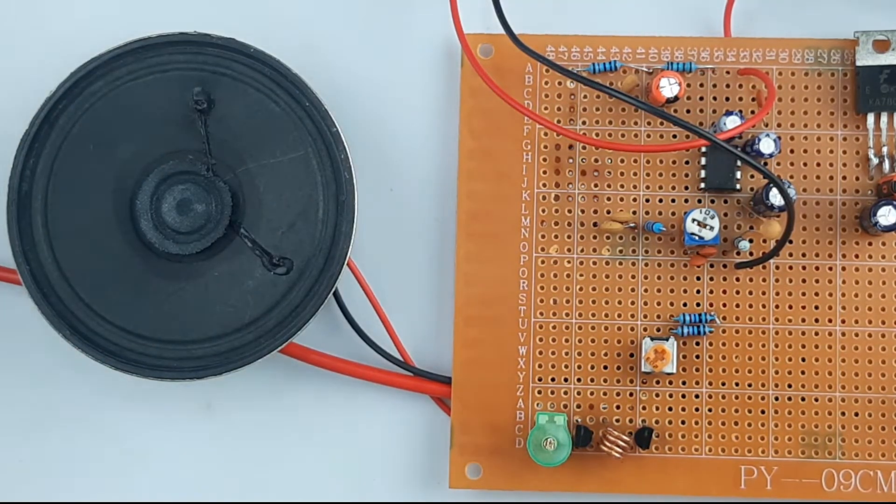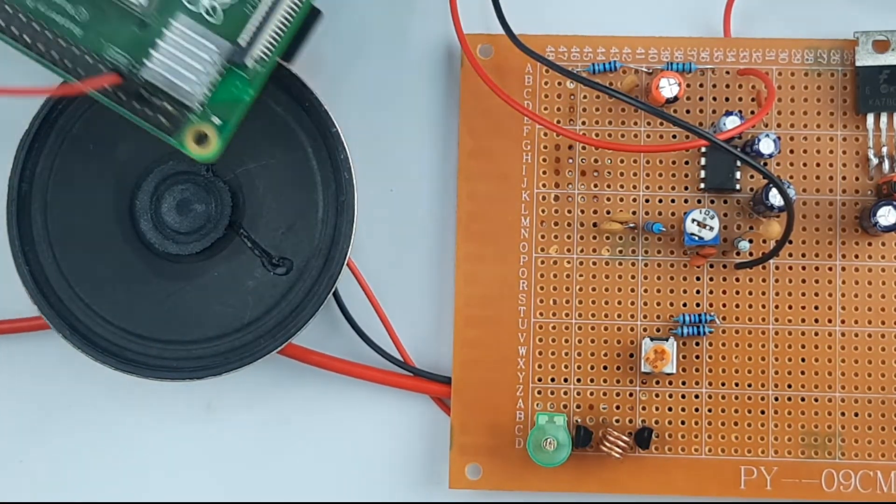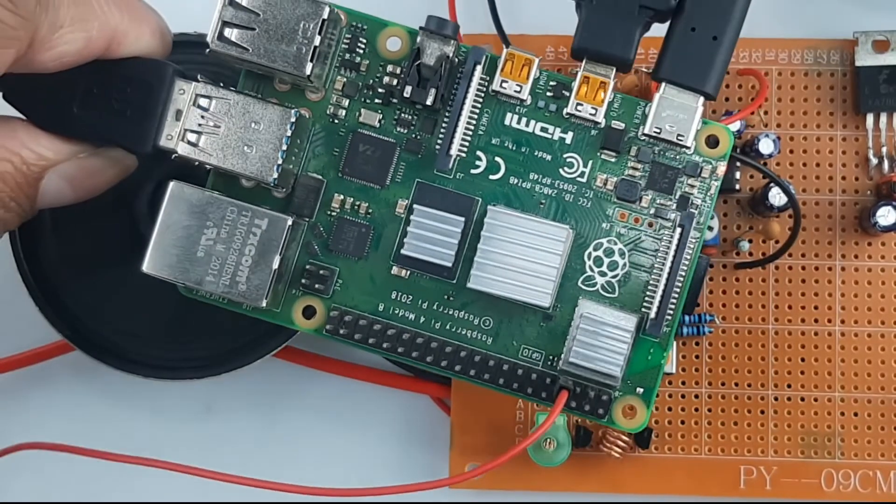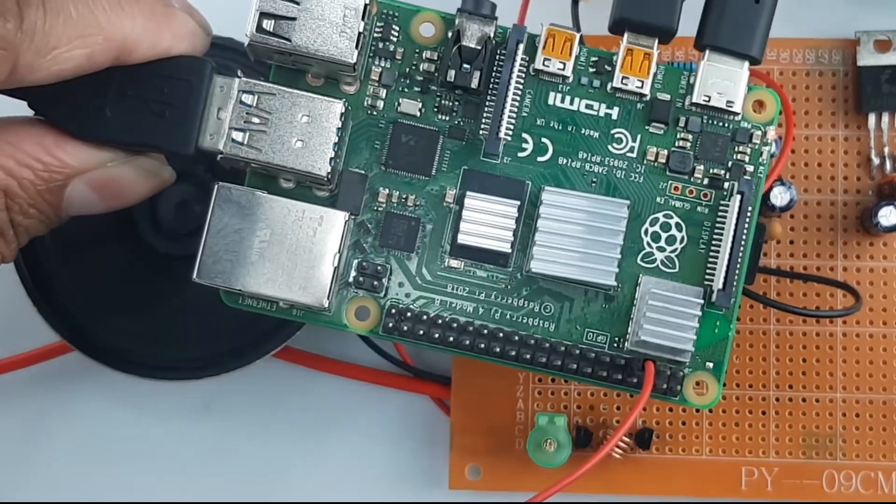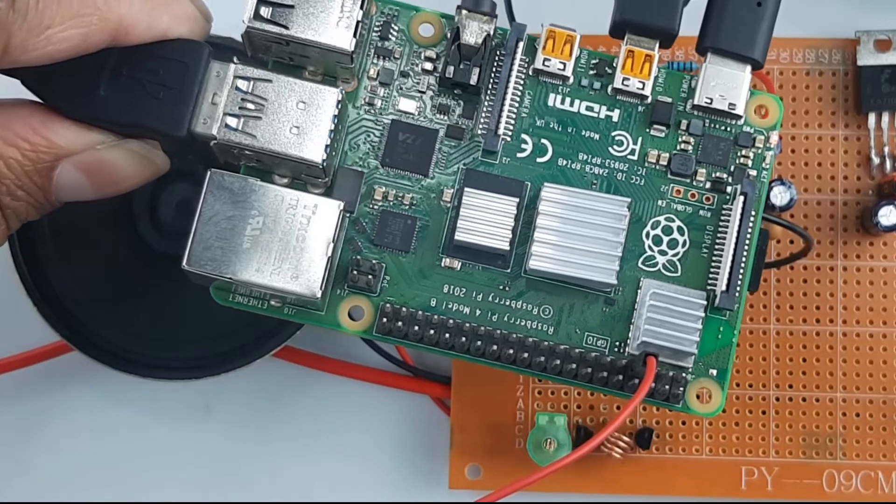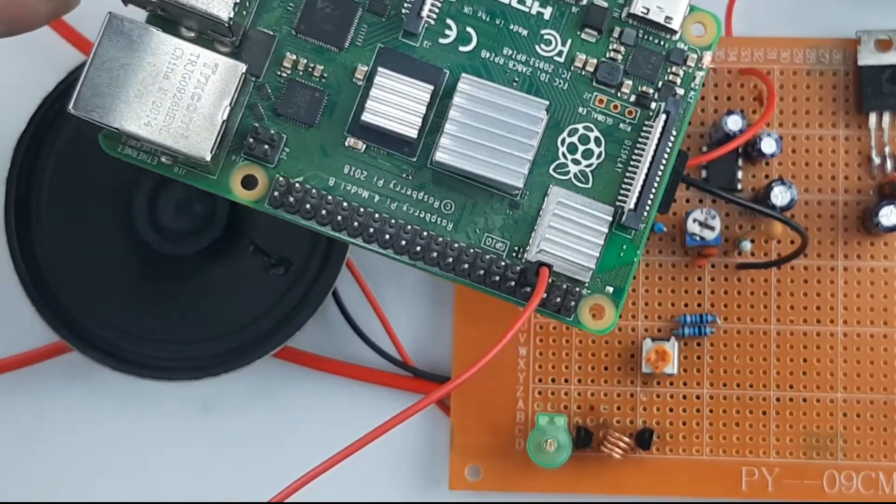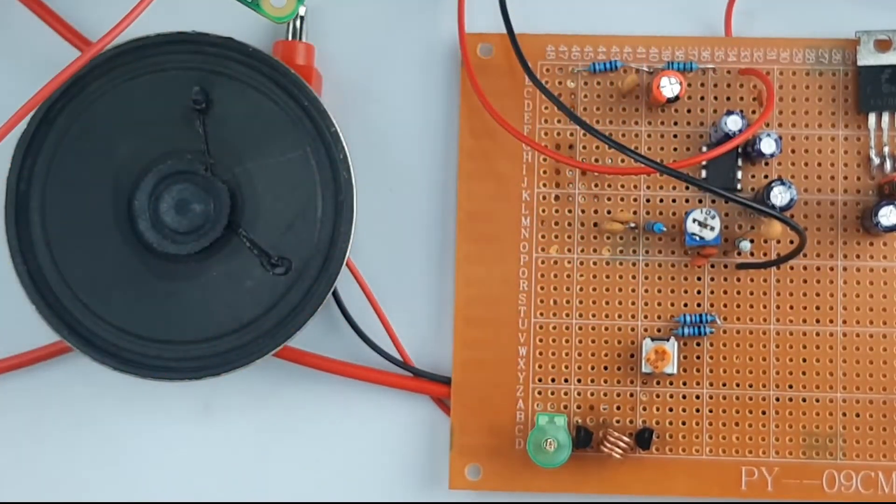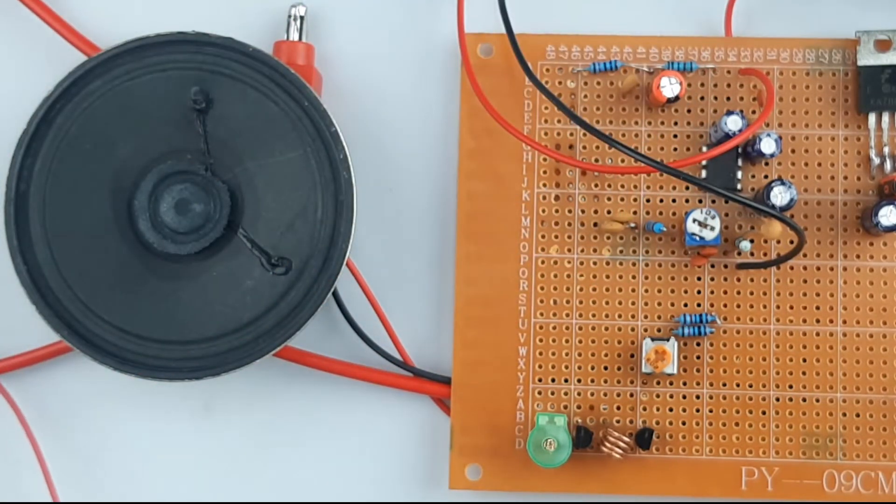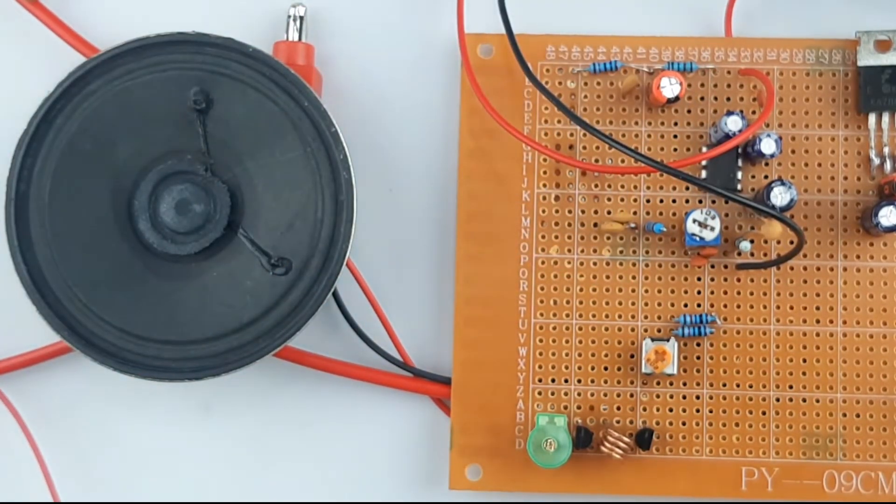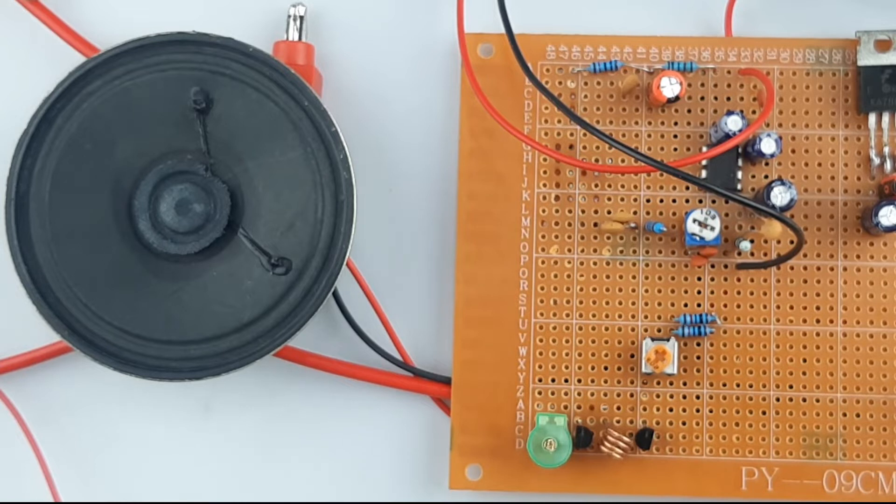For that reason, we have this Raspberry Pi based FM transmitter circuit. We've configured this Raspberry Pi as an FM transmitter and we will play some audio through this. Let's see if this small circuit is able to pick it up or not. I'll pause the video and set the Raspberry Pi up.